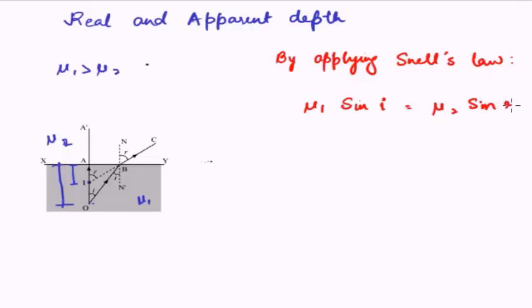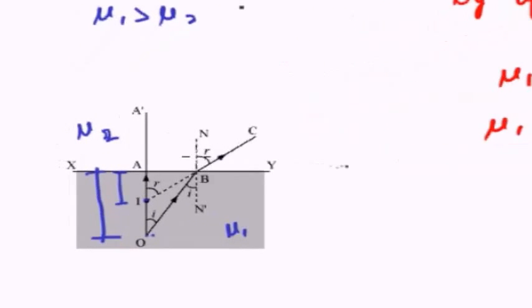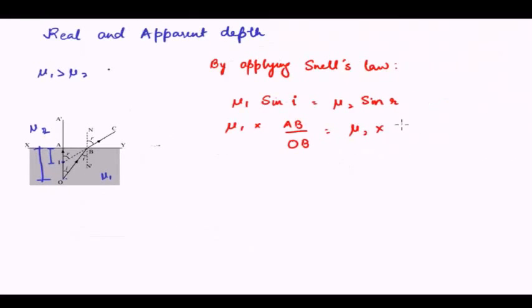Now let us find out what sin i is. Since this is i, this is also i as an alternate angle, and sin is opposite side by hypotenuse. So sin i will be AB upon OB. Therefore mu1 times AB upon OB equals mu2 times sin r. Now this whole angle will be r, and this being the alternate angle will also be equal to r. Therefore sin r will be the opposite side, that is AB upon IB. So we can write sin r is equal to AB upon IB.